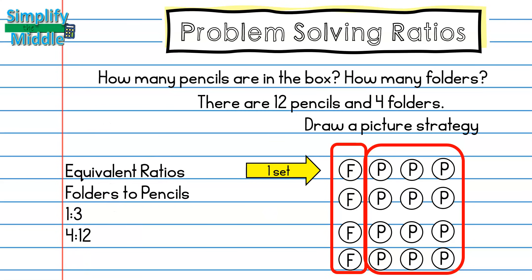This probably looks familiar because we looked at something very similar to this in our equivalent ratio lessons. We have folders to pencils. In our original set we had one to three, and in our total set here we have four to twelve.